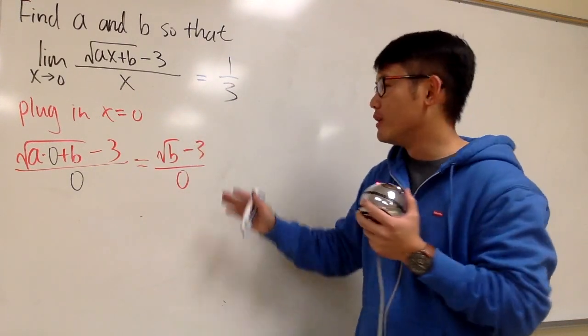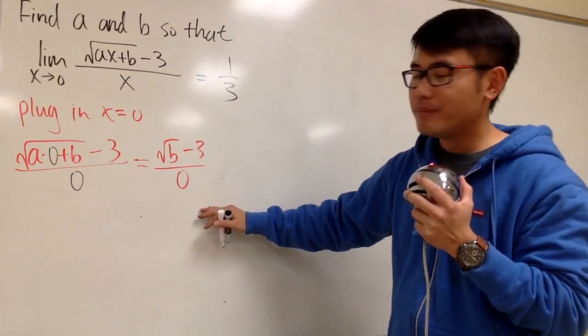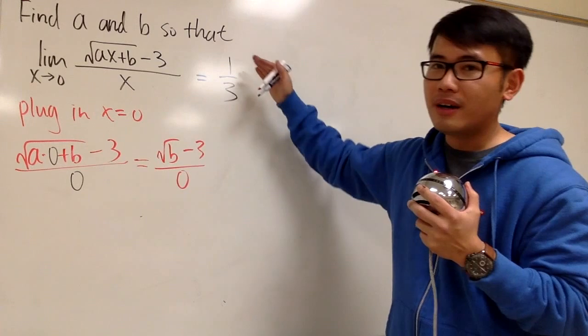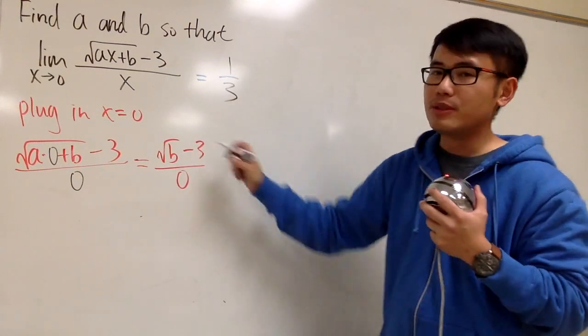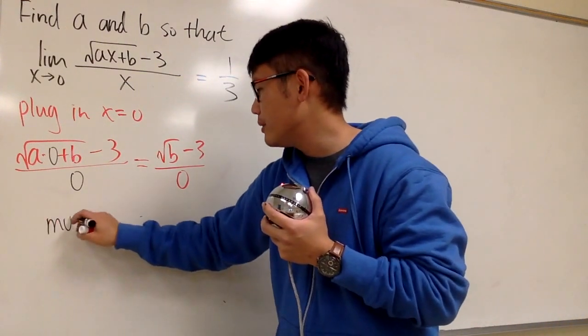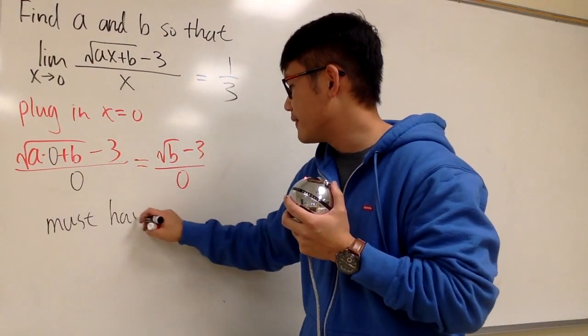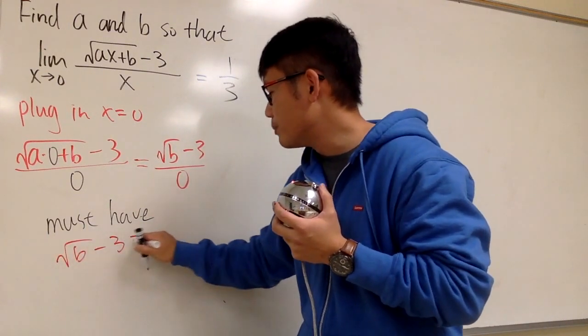The only way now, because we have the 0 on the bottom already, for this to end up to be 1 third, or any other finite value, is that the top is also 0. Therefore, we must have the top, square root of b minus 3, to be 0 as well.